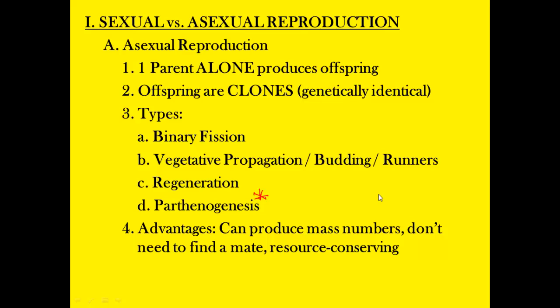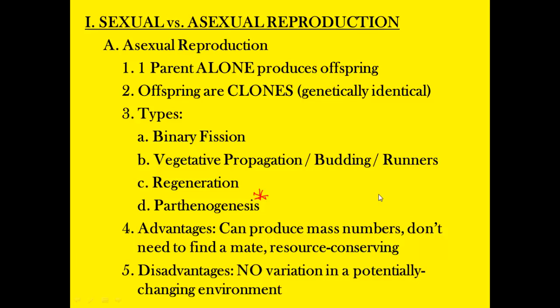There are advantages to asexual reproduction: you can get huge numbers of individuals, lots of population growth, and it is very energy efficient because you don't need to find a mate. A lot less energy and you conserve resources. The drawback, though — genetically identical to the parent — is a huge drawback. Which is why most organisms don't use this mode. In areas where you have a potentially changing environment, that's a big deal, because if the environment changes in a way that makes it unsuitable to that population, the population is wiped out. If they're genetically identical, none have more likelihood to survive for maintaining the population generation after generation.